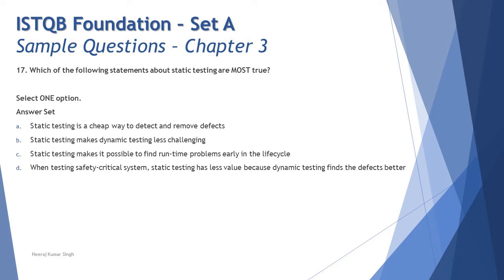Option C: 'Static testing makes it possible to find runtime problems earlier in the life cycle.' This sounds appealing, but static testing is about work products, while dynamic testing deals with runtime and the application. The key word here is 'runtime problems' — not work product-related problems. Each word plays a vital role; missing one word can make every option seem correct.